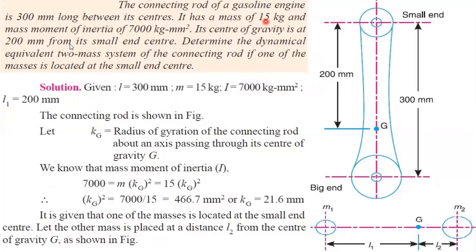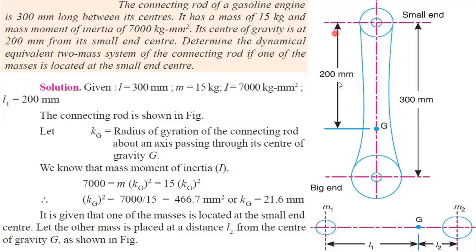The connecting rod of a gasoline engine is 300 mm long between its centers. Here we will be having the small end and here we will be having the bigger end. The distance between the centers is given as 300 mm. It has a mass of 15 kg, and mass moment of inertia I is equal to 7000 kg·mm². Its center of gravity is at a distance of 200 mm from its small end center.